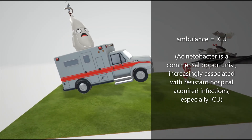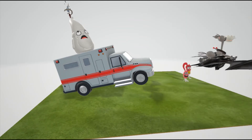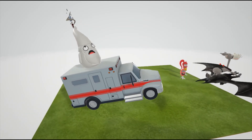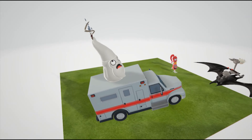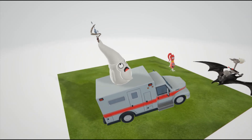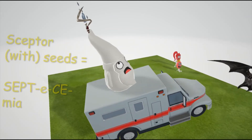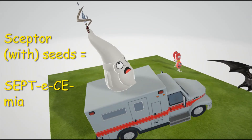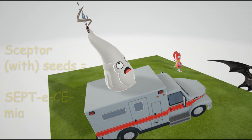The ambulance helps us remember the ICU, and on top of it is a gnome. This gnome comes up in a lot of different videos to represent pneumonia. Acinetobacter can cause ventilator-associated pneumonia, as well as septicemia — represented by this scepter with random seeds on top of it — in immunocompromised patients.